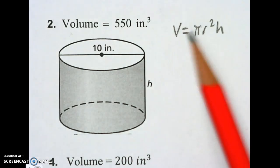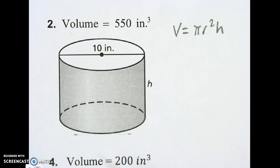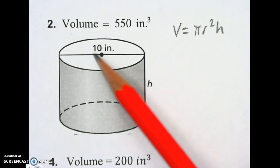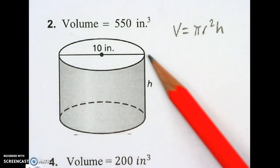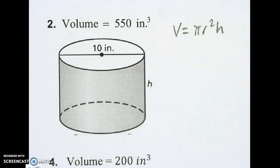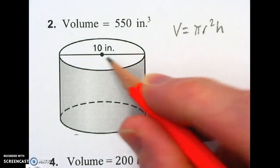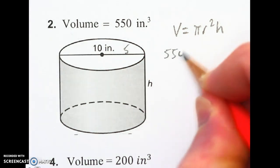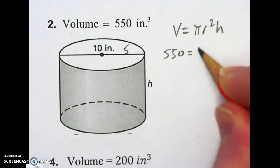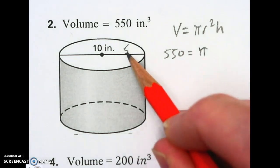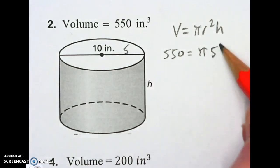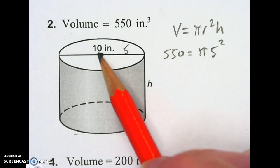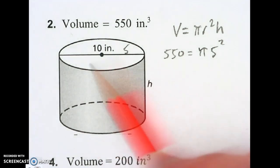All you need to do is plug in the pieces that you're given from the picture — the volume, the radius, and the height. It looks like we have a diameter because it goes all the way across the circle. If you have a line that goes all the way across, you need to cut it in half. So I know my radius is 5. I'm going to put my volume in of 550 times pi, and the radius of 5 — that's 5 squared. I got that by dividing the 10 in half because it was a diameter; now it's a radius.